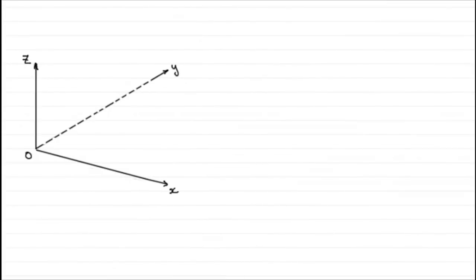Hi, welcome to this tutorial on the magnitude or modulus of a vector. What I've got here is a typical set of axes — x, y, z — all at right angles to one another.